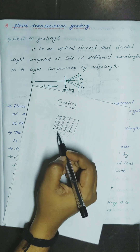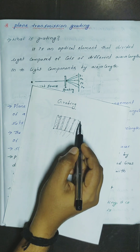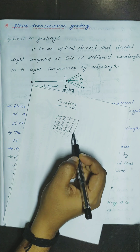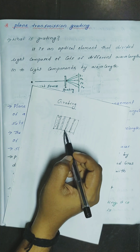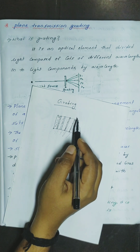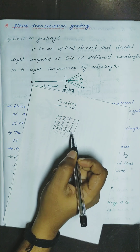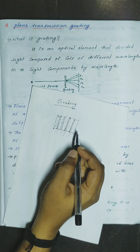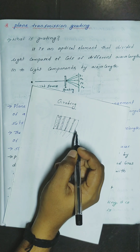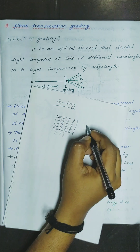You can use a grill or a window in your mind. This is a grating — it is an optical instrument. What is the grating?